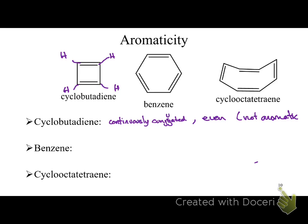Anti-aromatic molecules are so unstable that cyclobutadiene actually folds itself to avoid being continuously conjugated. The molecule bends itself just to avoid the anti-aromatic destabilization.